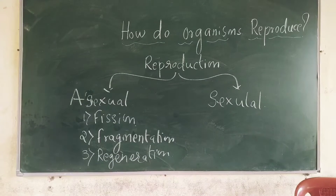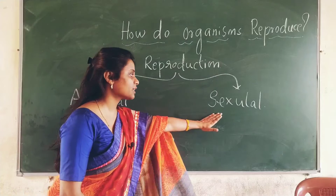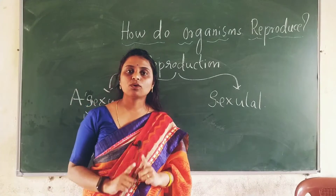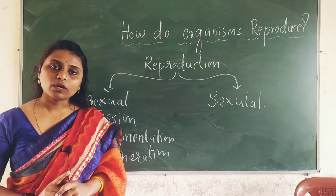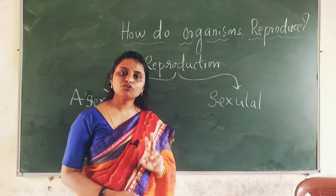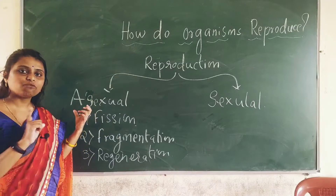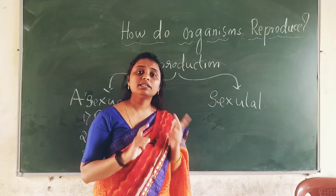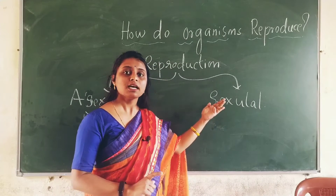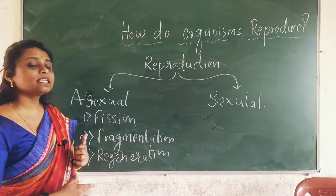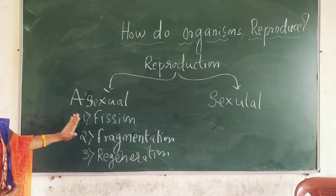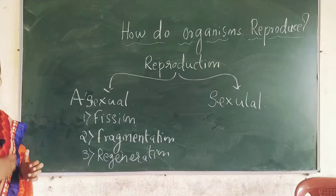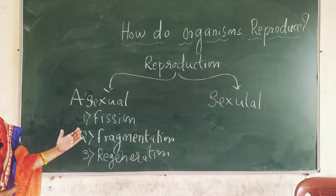Reproduction is of two types: one is asexual reproduction and another one is sexual reproduction. In asexual reproduction, there is involvement of only one parent. In sexual reproduction, there is involvement of two parents which are sexually different. Asexual reproduction can be carried out through fission, fragmentation, regeneration, and other methods.